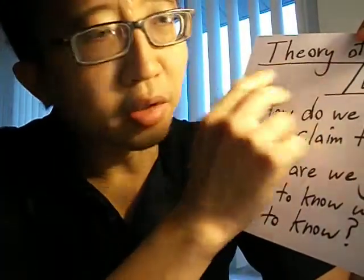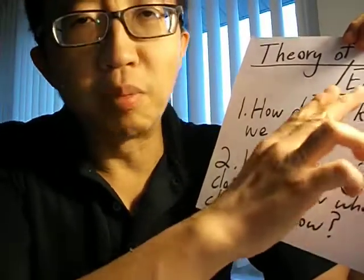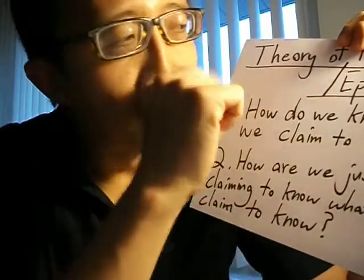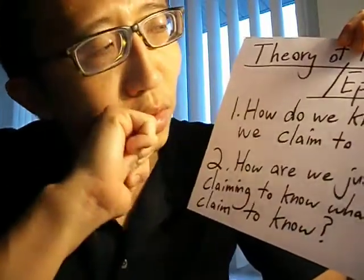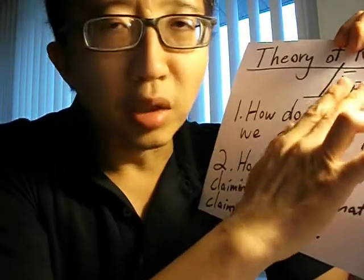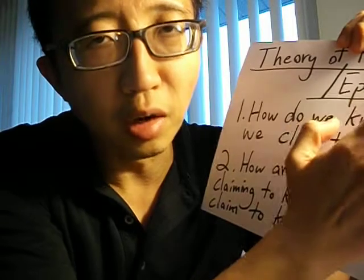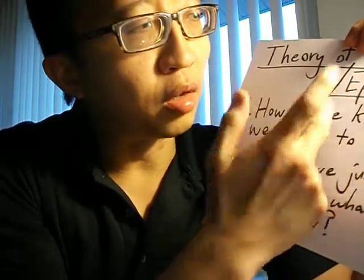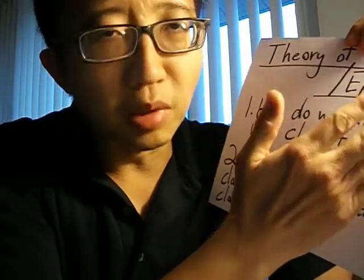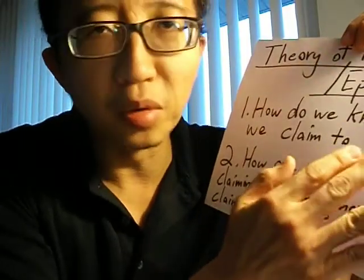Theory of knowledge is sometimes also known as epistemology. If you are confused with the word epistemology, you can break it down into its components. Epistemology comes from two Greek words: episteme and logos. Episteme means something like knowledge or science. Logos means a theory or an account. So epistemology could be literally translated as the theory of knowledge, which is why to do epistemology is to do theory of knowledge, and vice versa.